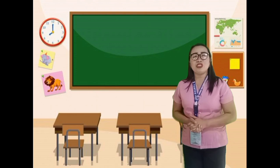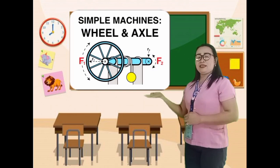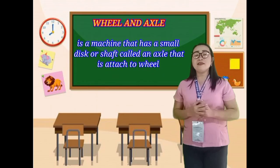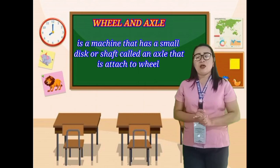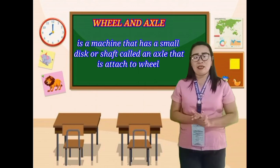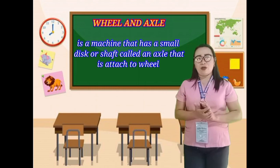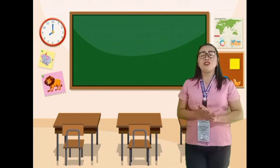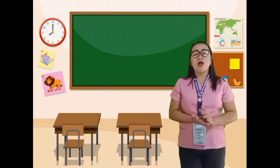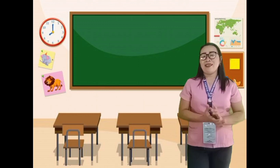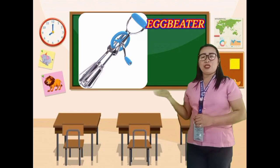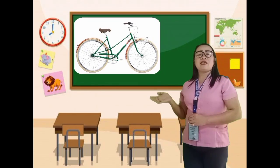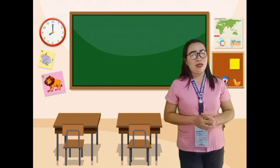The last type of simple machine is wheel and axle. The wheel and axle is a machine that has a small disc or shaft called an axle that is attached to a wheel. Wheels are usually used in pairs connected by a rod of wood or metal known as an axle. Examples of this are the doorknob, egg beater, and bicycle.